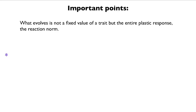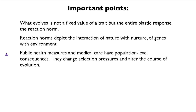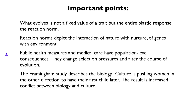The important points are these: what evolves in life history evolution isn't a fixed value of age at maturity or number of offspring, but the entire plastic response — the reaction norm. Reaction norms depict the interaction of nature and nurture, of genes with environment, in a way that makes clear it is not one or the other, but both. Public health measures and good medical care have population-level consequences: they change selection pressures and alter the course of evolution, as the Framingham study illustrates. Cultural evolution is also going on — women encounter both their biology and their culture, and culture is pushing them to have their first child later, resulting in increased conflict between biology and culture.